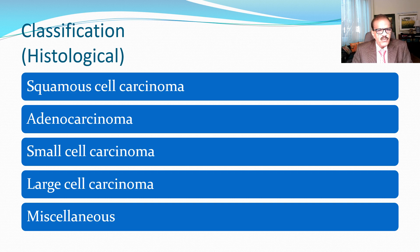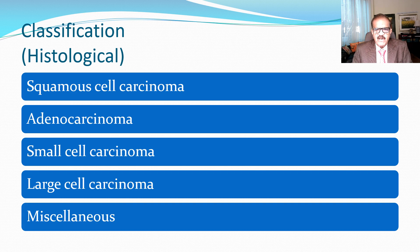Small cell carcinoma is unique — it is present in no more than about 5 to 10% of cases, but it has paraneoplastic features and tends to metastasize very early. Large cell carcinoma is also a very poorly differentiated lung cancer that tends to metastasize early. Both small cell and large cell lung cancers are relatively resistant to treatment. Then there are miscellaneous types. So mostly we deal with squamous cell and adenocarcinoma, but in some cases it may be small cell or large cell.